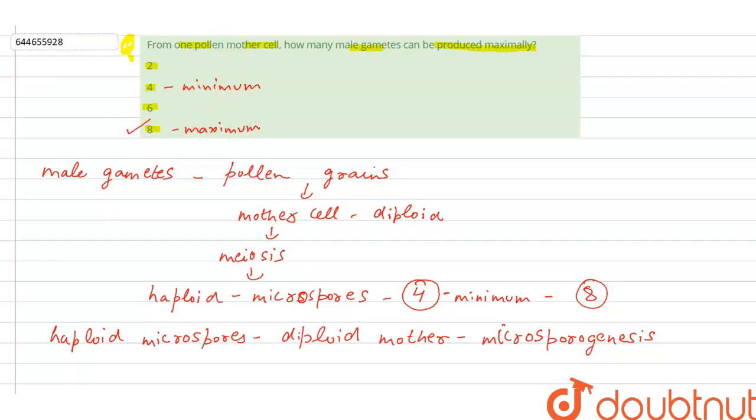So therefore the first option, that is two, this is the impossible one as four is the minimum amount. And six, this is also the incorrect option as six are not formed. So the correct option to our question is eight and the other options are the incorrect ones.